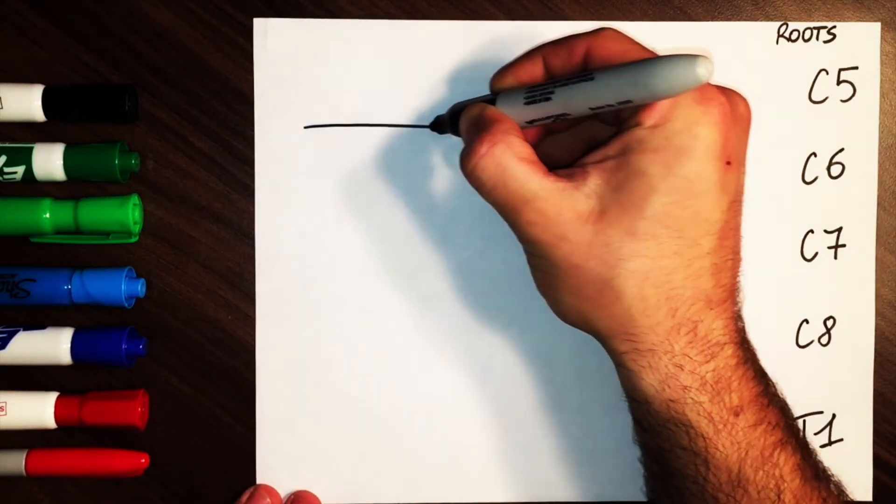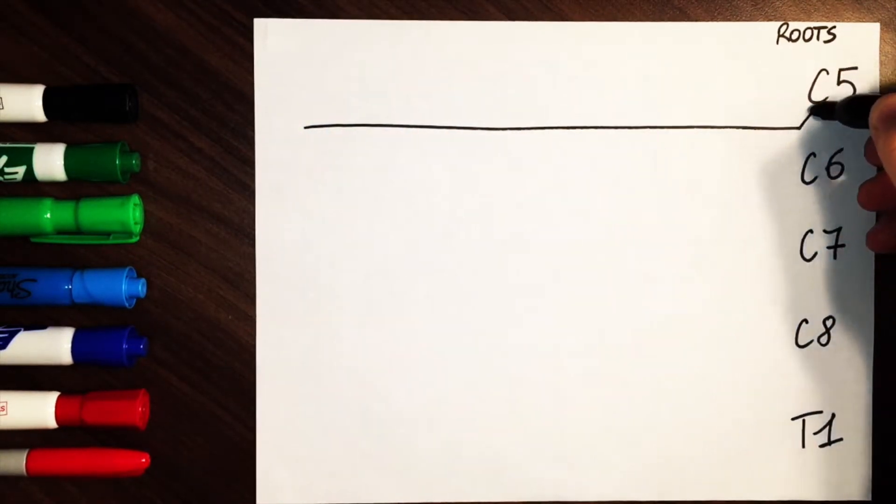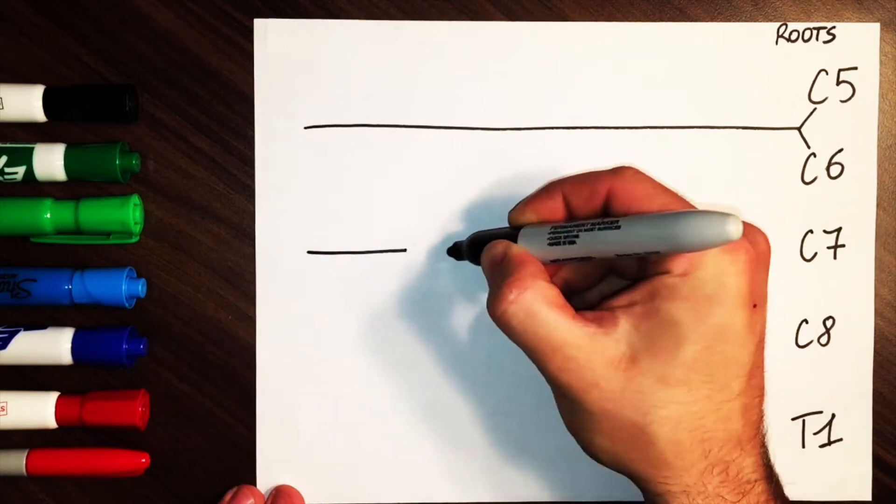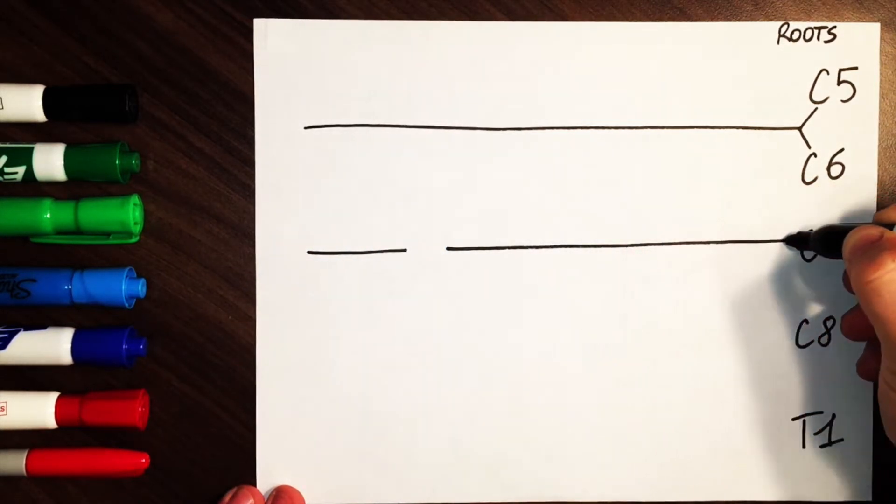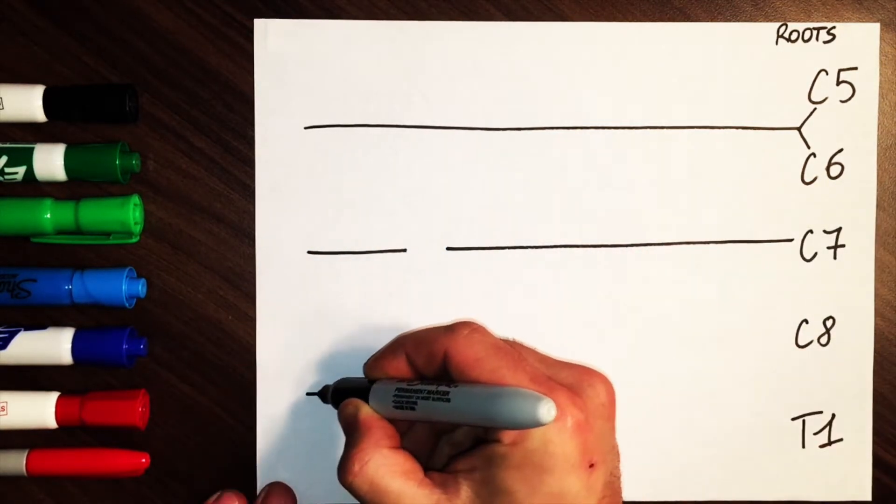Draw a straight line between C5 and C6. Then draw two lines for C7, leaving a bit of space between the two. And finally, the third one between C8 and T1.